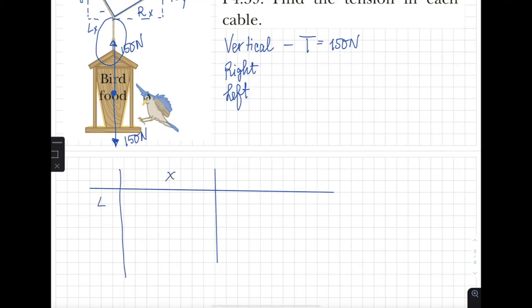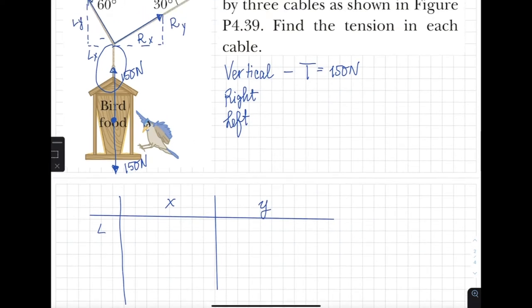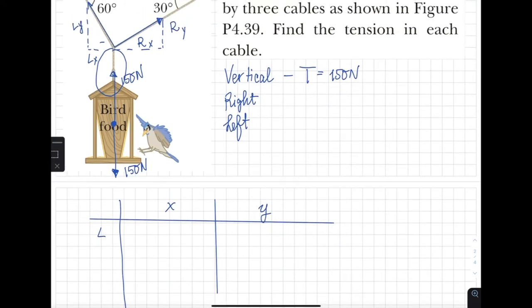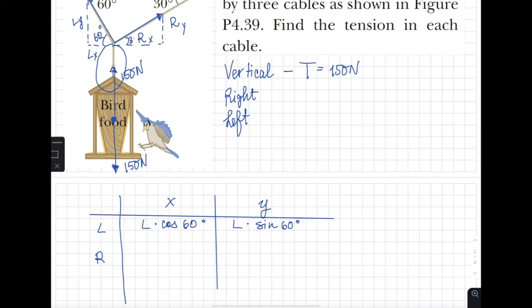So if I look at my X and Y components, so left and right, left X and Y component. So for left I would have to do left. If this is 60 degrees and that is 60 degrees, so it's going to be left cosine of 60, left sine of 60.